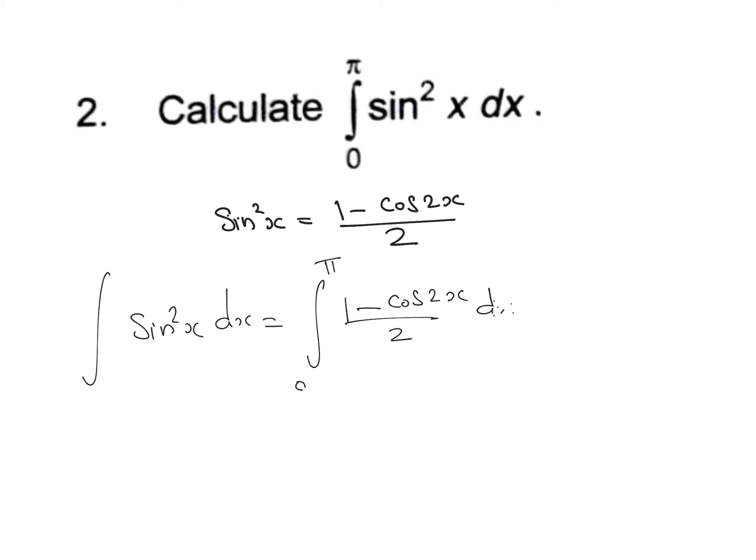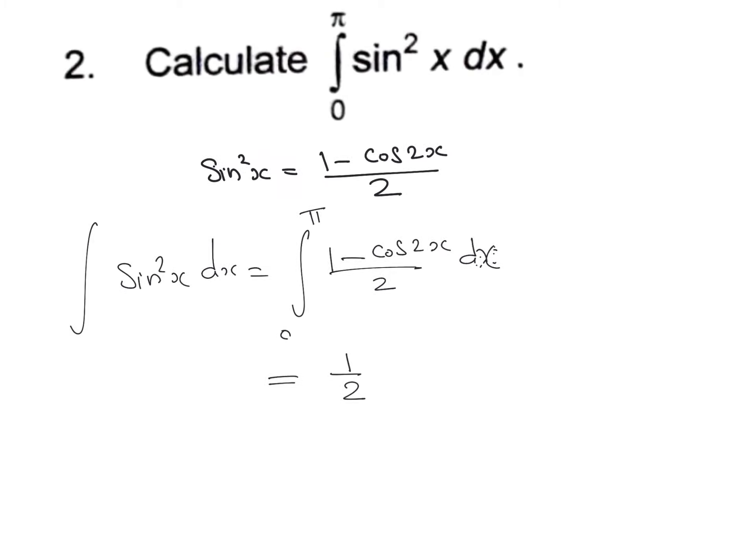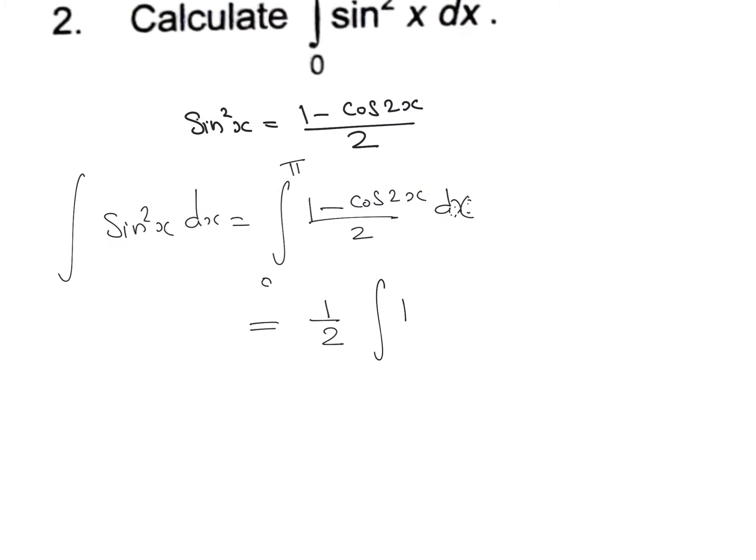Now, since 1/2 is a constant, we can take it outside. It becomes (1/2) times the integration of (1 - cos 2x) dx, within the limit from 0 to π.